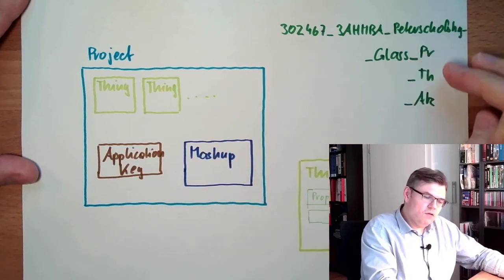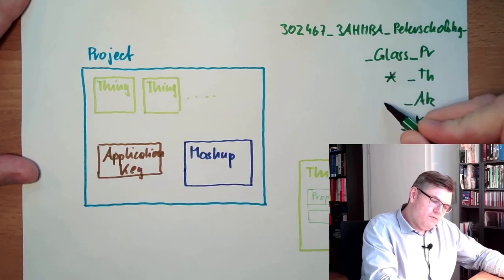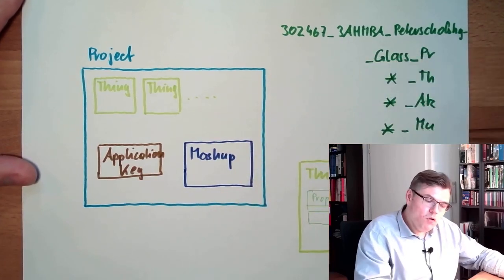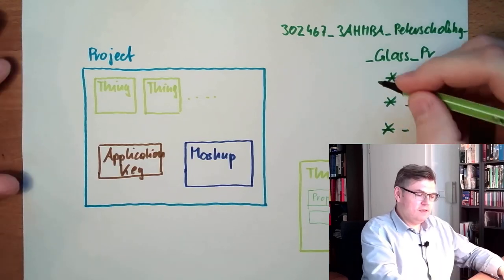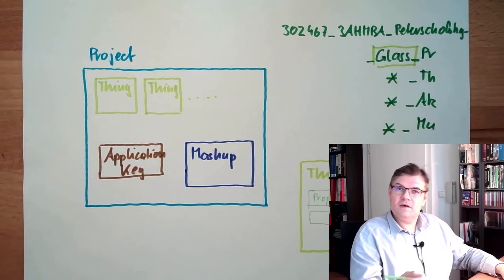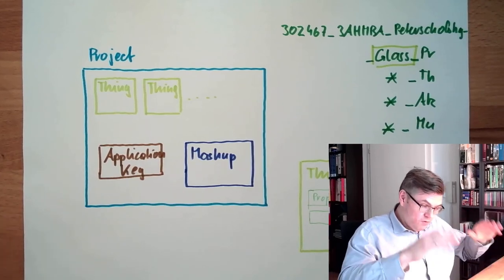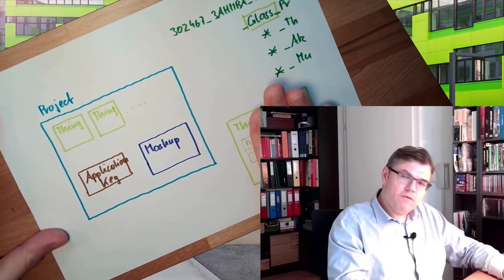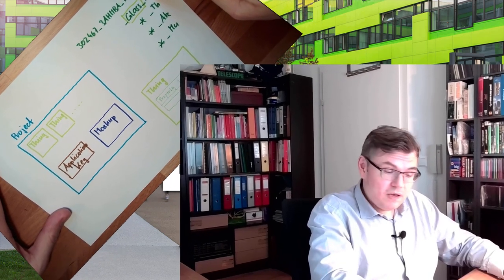This is an advice to everybody: use some suffix. For a project, use PR. For a thing, use TH. For application key, use AK. For a mashup, use MU. This is an advice, regardless if you have here like us in school a numbering or a rule how to name your projects. In school, the only thing you can select is limited because we would get lost in our server if all our pupils are doing projects and it will be a mess. If you have your own ThingWorx instance, you can select whatever you like, but I advise you to use some suffix so it's organized somehow.